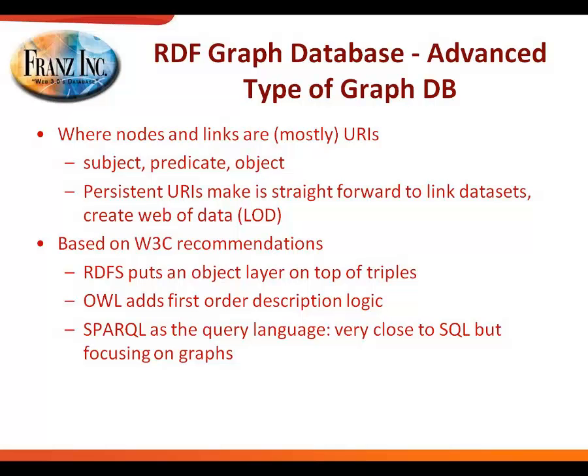This whole RDF system is based on W3C recommendations. About ten years ago you couldn't find anything about semantics and RDF on W3C websites — now it's probably a third of all webpages. RDF is the standard for representing things as triples or nodes and links. RDFS is a layer on top that lets you look at your data almost as objects. OWL is an even higher layer — still expressed as triples — that adds logic on top. And SPARQL is a standardized query language very close to SQL but focused on doing queries over graphs.